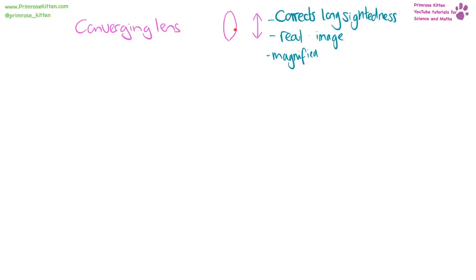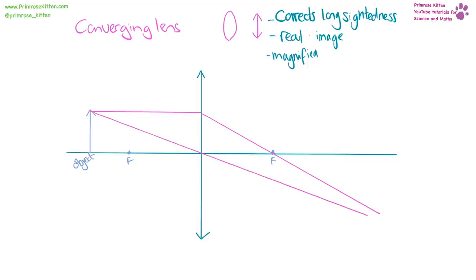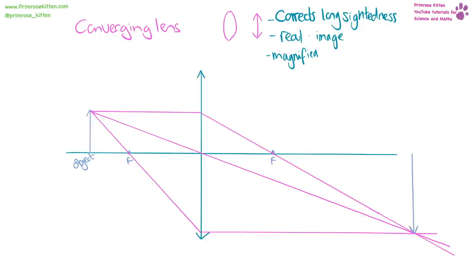A converging lens is convex-shaped and is used to correct long-sightedness. It produces a real image and is the type used in magnifying glasses. For a ray diagram: the first ray goes from the top of the object parallel to the axis to the lens, then through the primary focus on the other side. The second ray goes from the top through the middle of the lens. The third ray goes from the top through the near focus to the axis, then parallel. The image forms on the other side and is inverted.